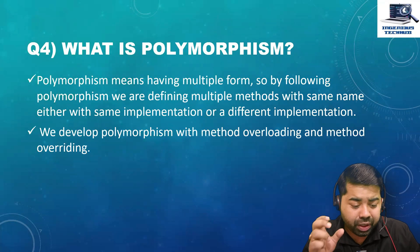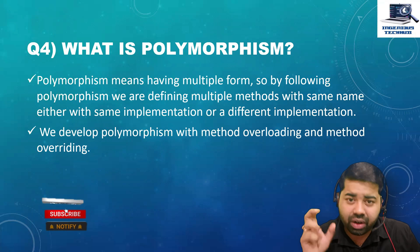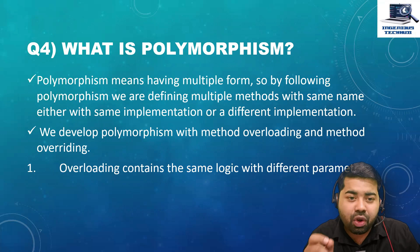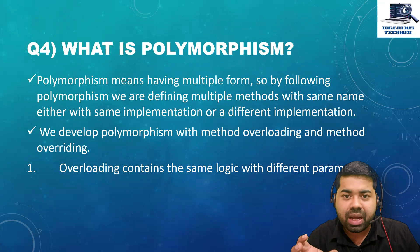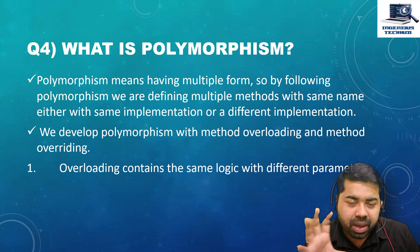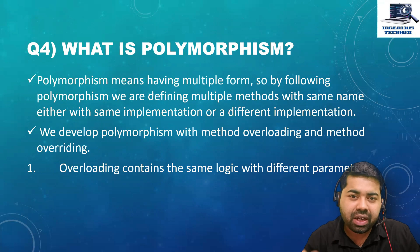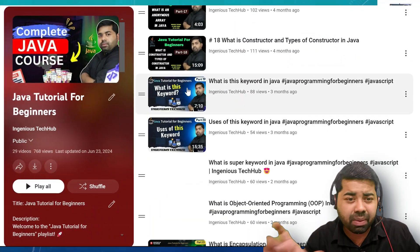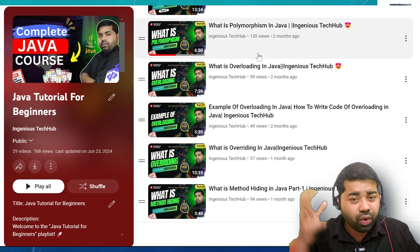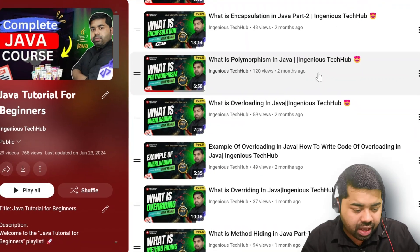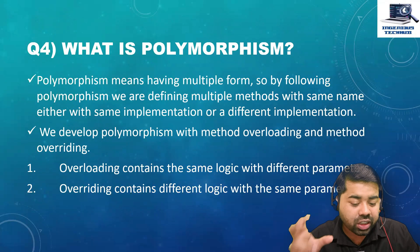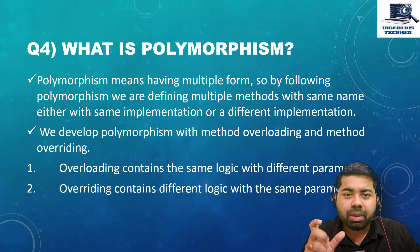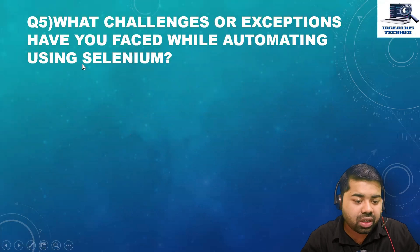We achieve polymorphism through method overloading and method overriding. Method overloading contains the same method name but with different parameters — same name, different parameters. I have explained this well in my Java tutorial, please watch it. Method overriding contains different logic with the same parameters — parameters are same but the logic is different.